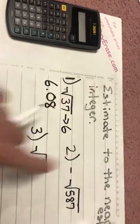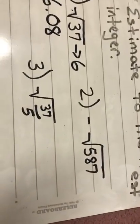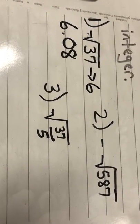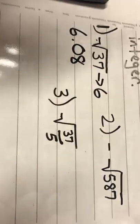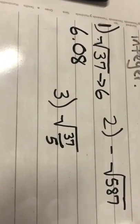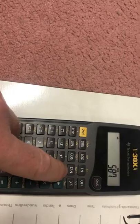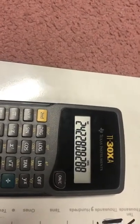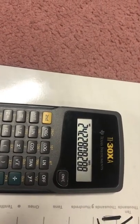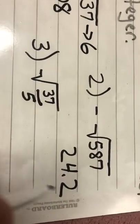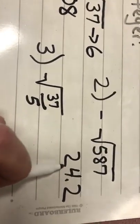Let's go to number two. The negative square root of 587. I can ignore the negative sign until the end, I just need to remember to make it negative. So when I come over here to my calculator, 587, press my square root button, I get 24.2. So that's what I'm gonna write down because all I need is one place after the decimal to tell me where that's going to go.